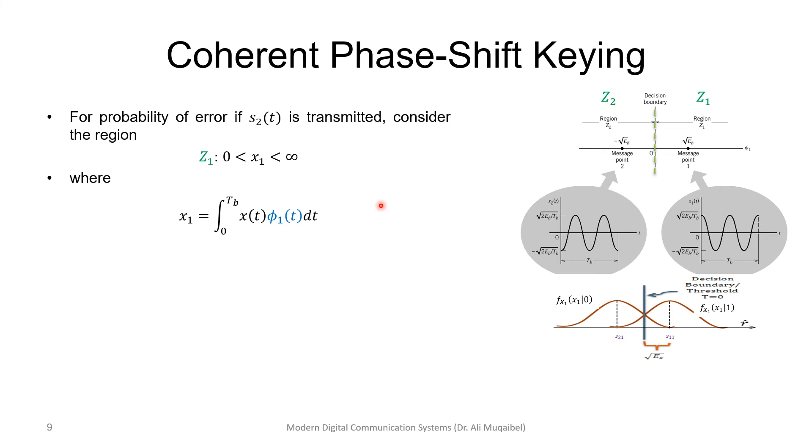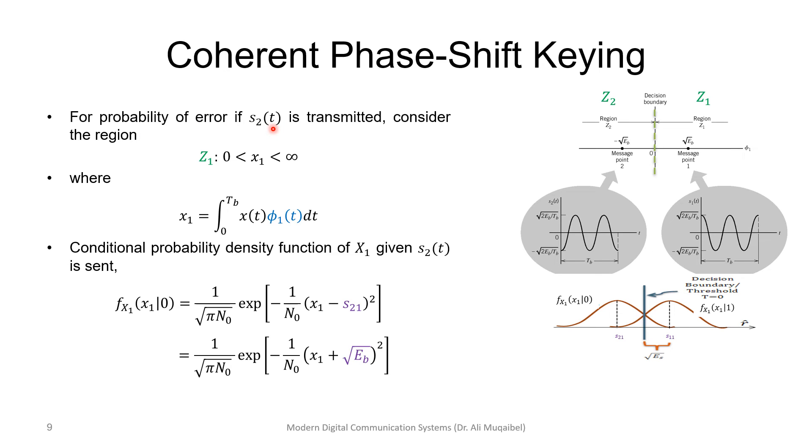We can represent the distribution of the probability with this Gaussian curve. So, for probability of error, if we start with S2 transmitted, which is this signal, then, of course, you get these two regions. And then, the probability of having error will be from zero to infinity, because we are sending this curve, and we are crossing the boundary from zero to infinity. So, I would integrate from zero to, if the received signal will be getting the signal and correlating with phi 1 from zero to Tb. Now, this will give you the conditional probability, which is Gaussian. So, this is nothing but the representation of this Gaussian, which is shifted to S21, which is the component of the negative or the DC value here.